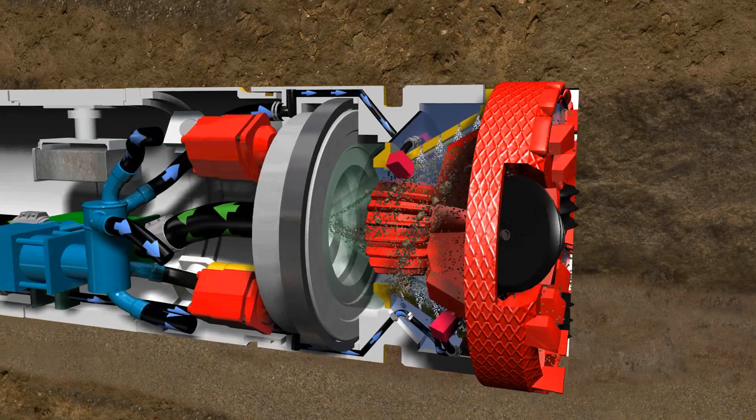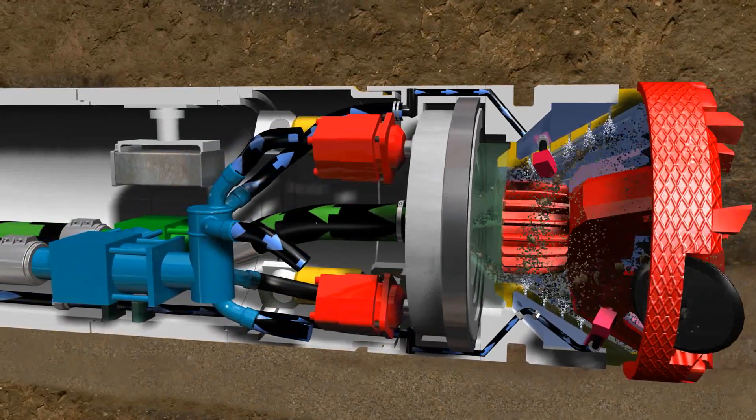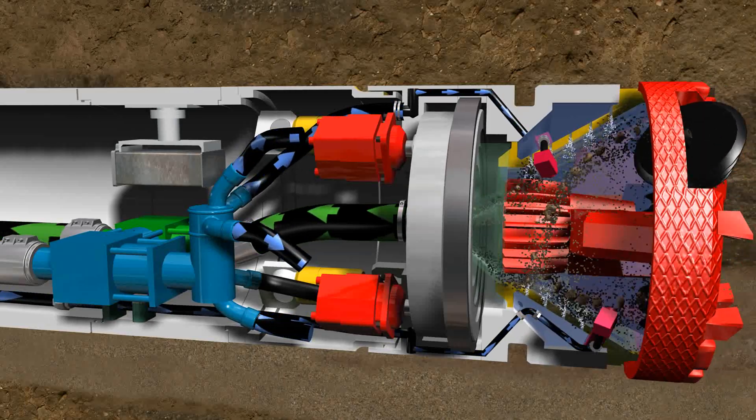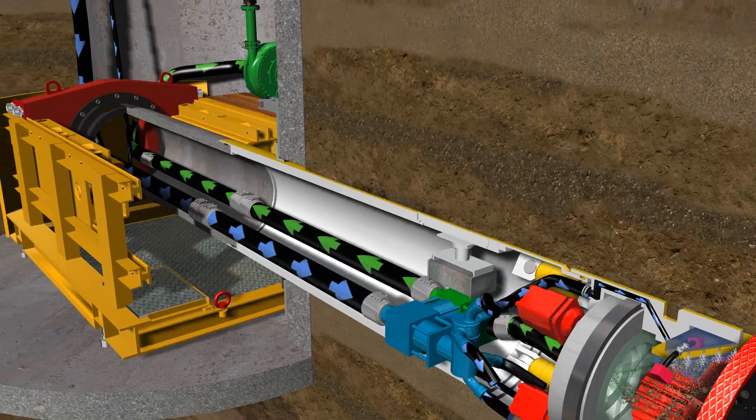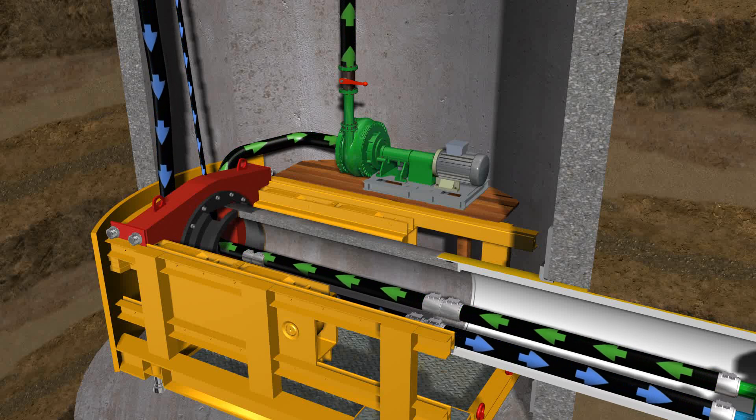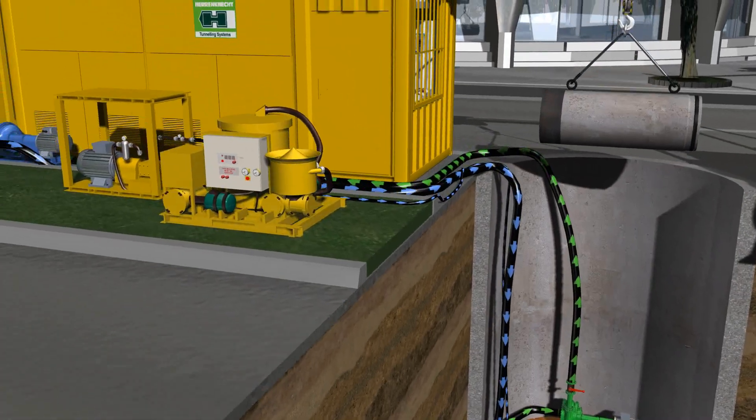The material is picked up in the slurry circuit and transported to the separation plant through the central slurry discharge hose. The slurry discharge hoses and the slurry feed hoses pass through the center of the jacking pipes via the jacking frame up to the surface. The slurry discharge pump removes the excavated material and pumps it up to the separation plant.